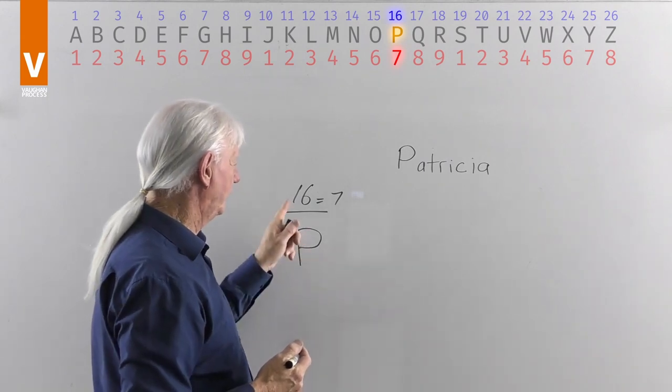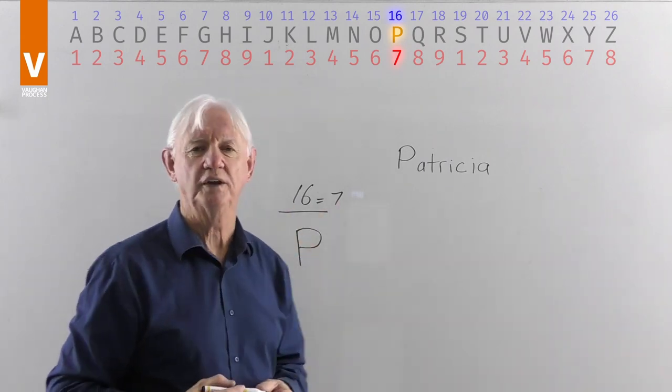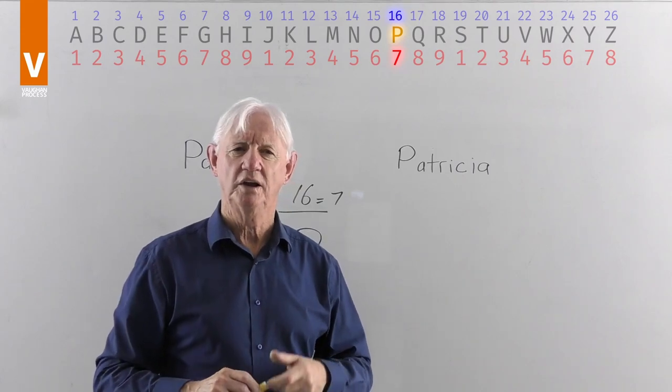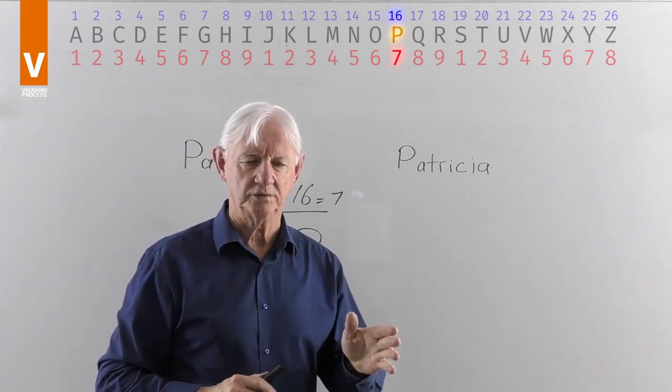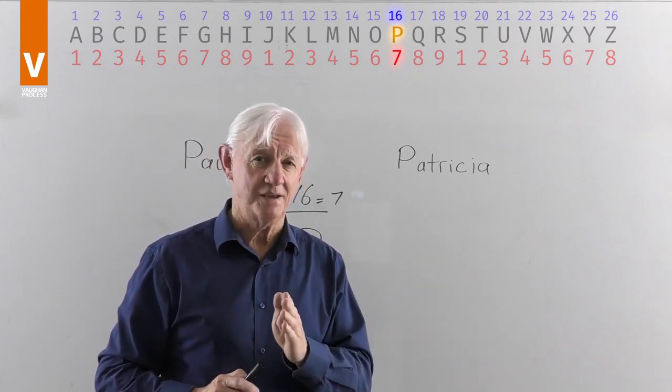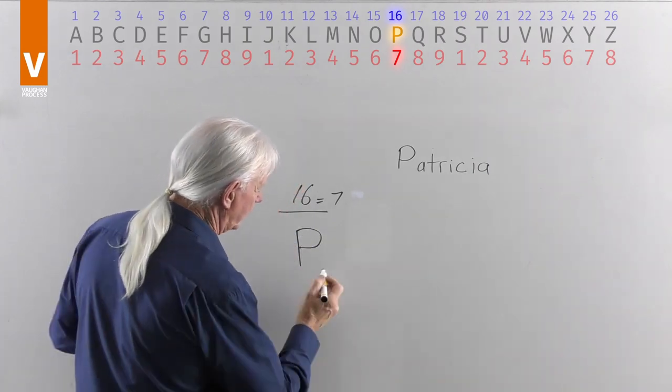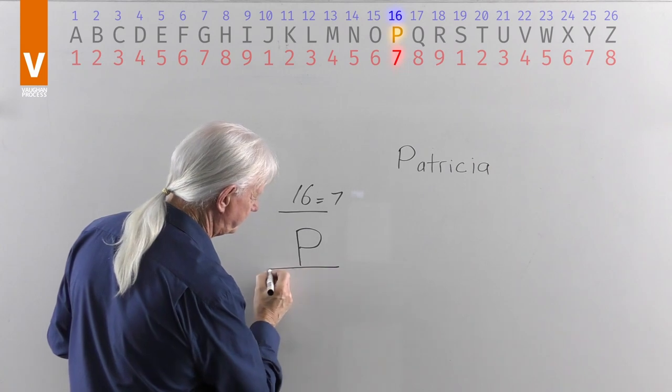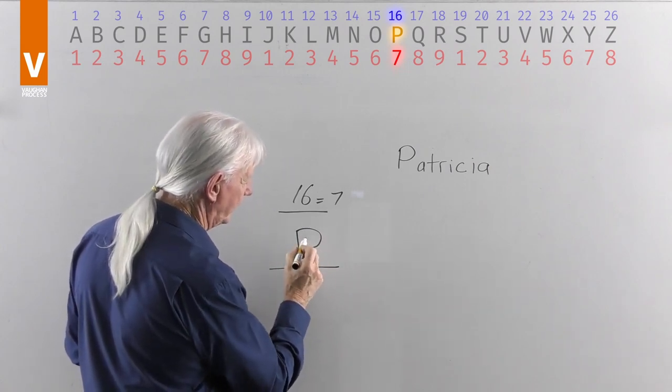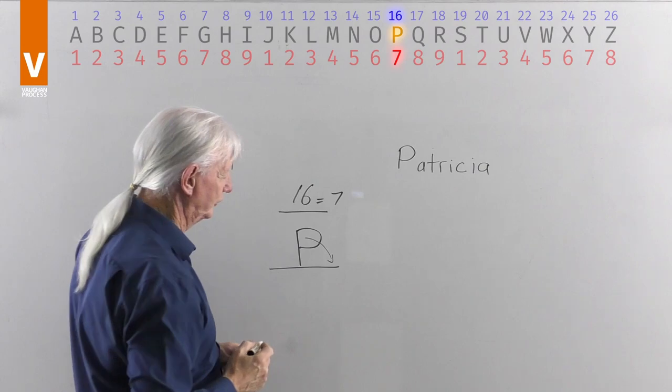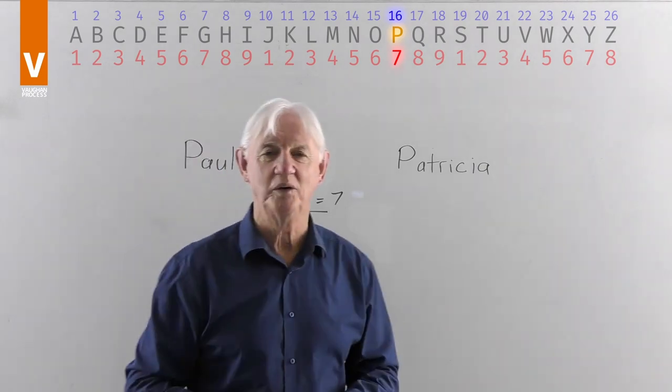And because it adds up to 7, it likes to hold on to things because it likes knowledge. It likes to learn about things. But the letter P, when it's younger, has a tendency because of its structure and shape, it's top-heavy with knowledge. It has a tendency to fall over on its nose more often than not when they're younger.